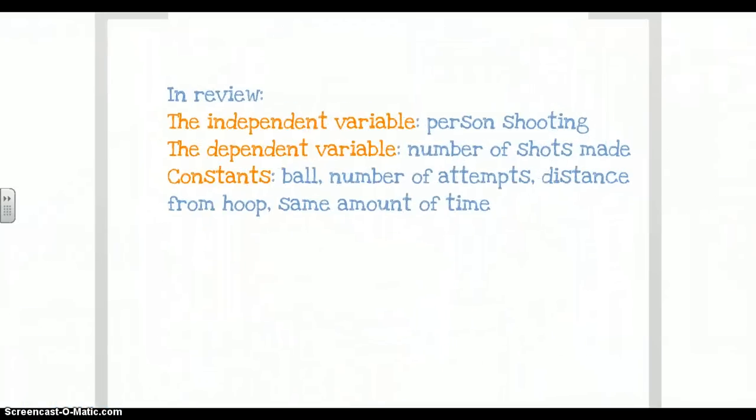When we're listing out what the variables were, variables are factors that can be changed in an experiment. Sometimes you change them, and sometimes they change on their own. The one that you change is called the independent variable—in this case, it was the person shooting. The one that changes on its own is the number of shots made; that's the dependent variable. That changed all by itself because we had different people shooting the ball.